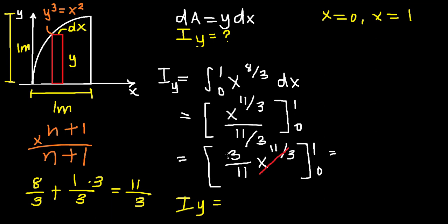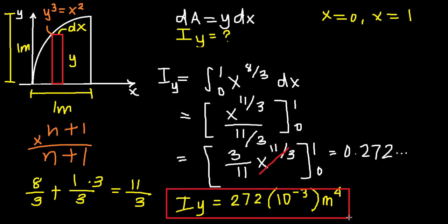So hence, 3/11 is going to be 0.272 and so on. We can turn that into our scientific notation, so that's much easier to look at. 272 times 10 to the power of negative 3 meter to the power of 4. And that is our final answer.